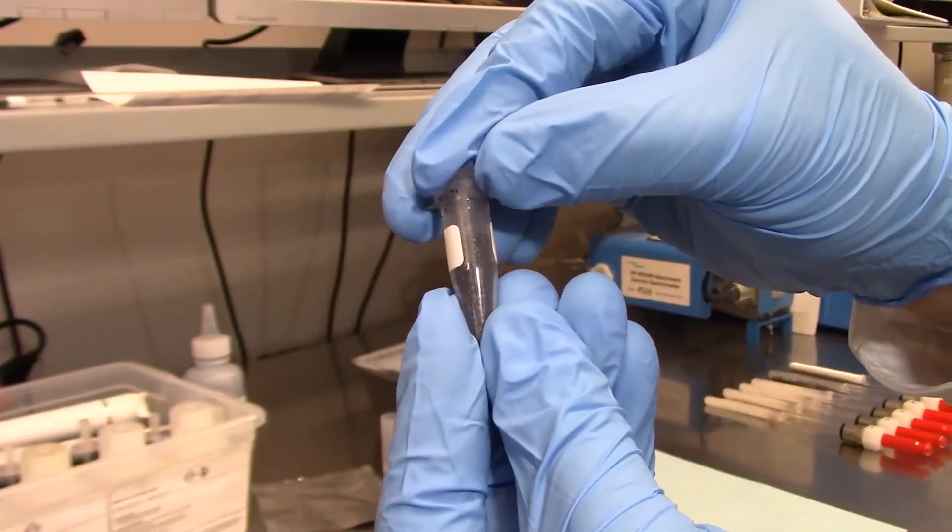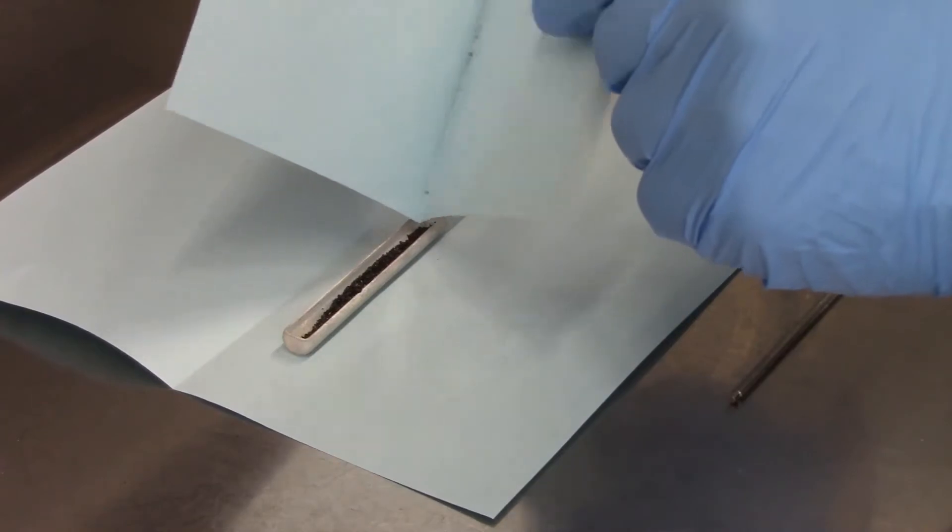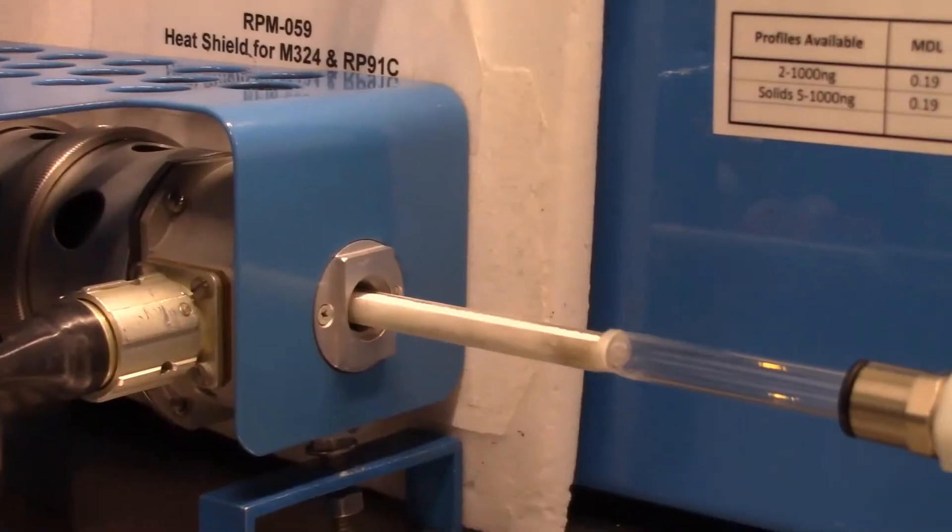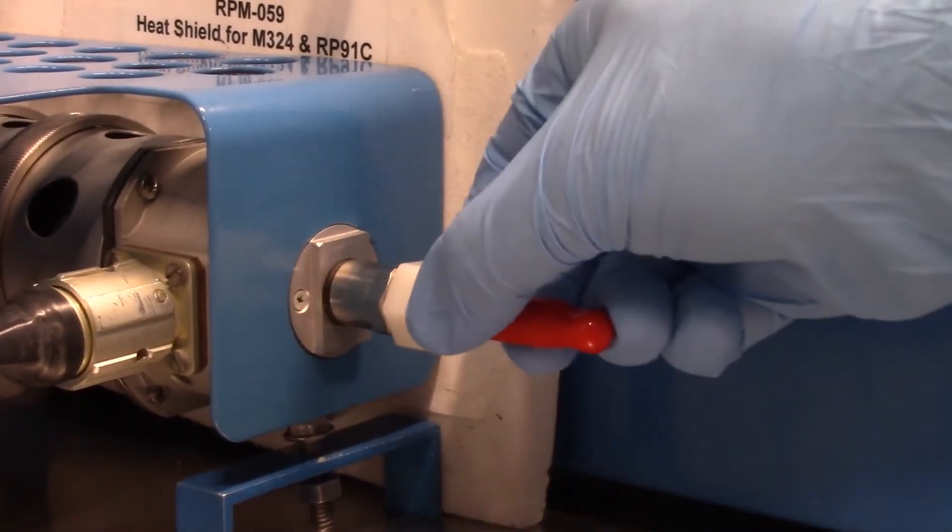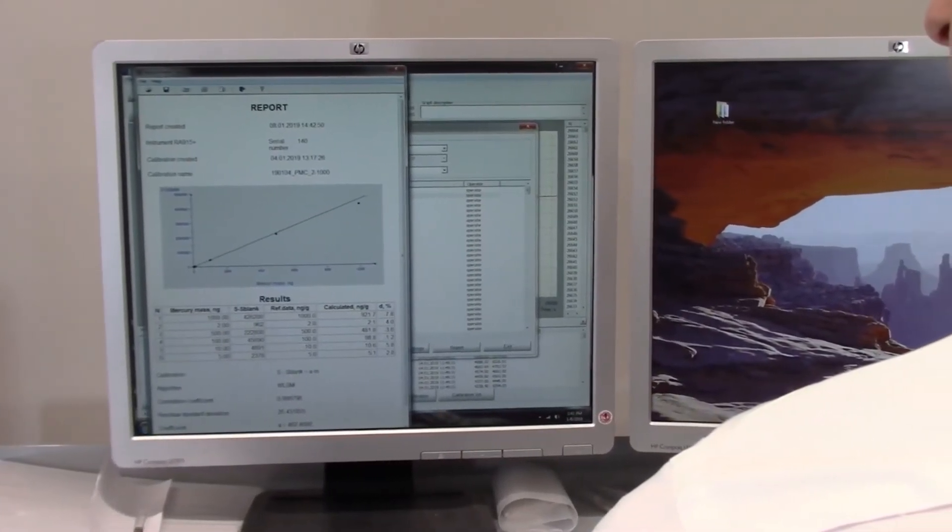It's easy! Simply open a vial of dry standard, pour it into the ladle, cover it with sodium carbonate, and insert the standard in the analyzer. Repeat this for every calibration point, then calculate your calibration curve.